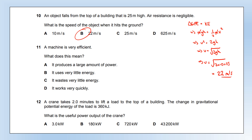Question 11: a machine is very efficient — what does this mean? Efficiency is about not wasting energy. 'Large amount of power' — no, that's not efficiency. 'Uses very little energy' — no. 'Wastes very little energy' — yes, that's efficiency. 'Works very quickly' — no, that's not efficiency either.